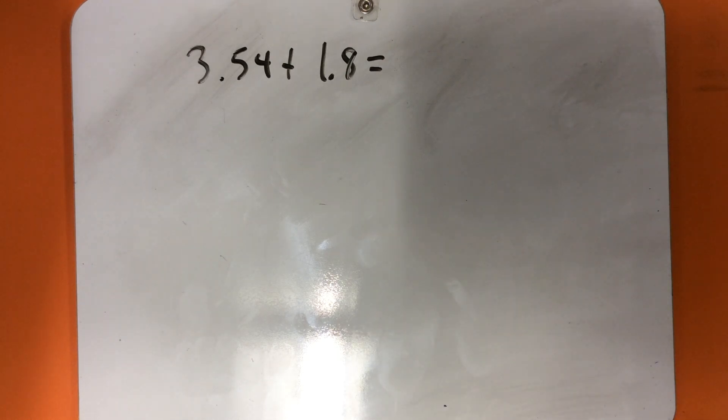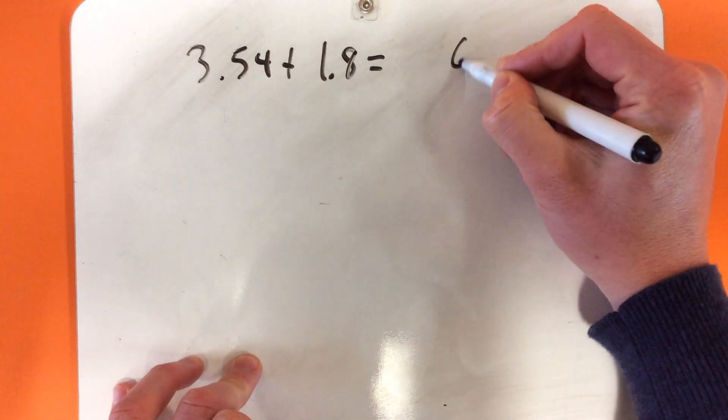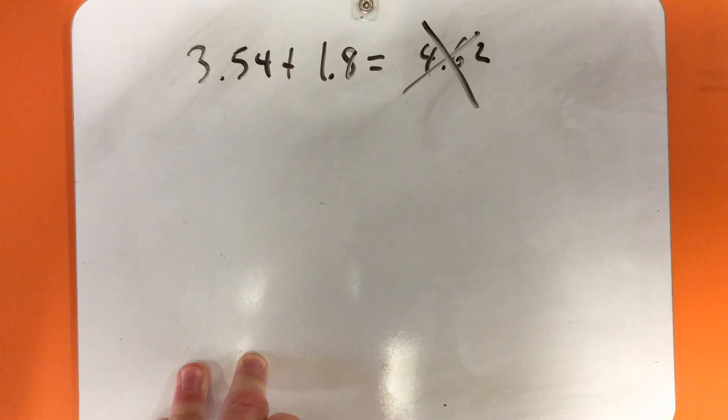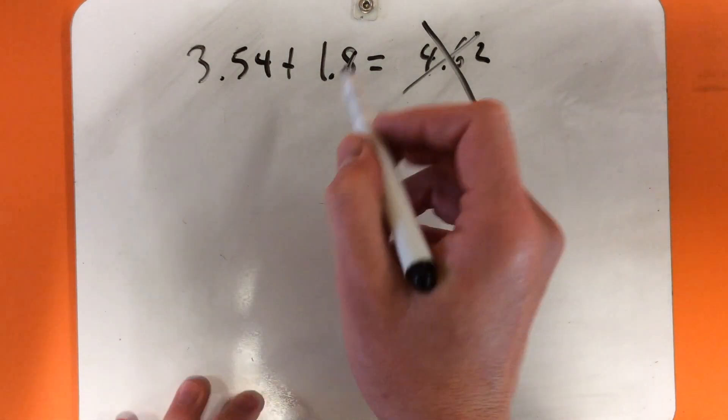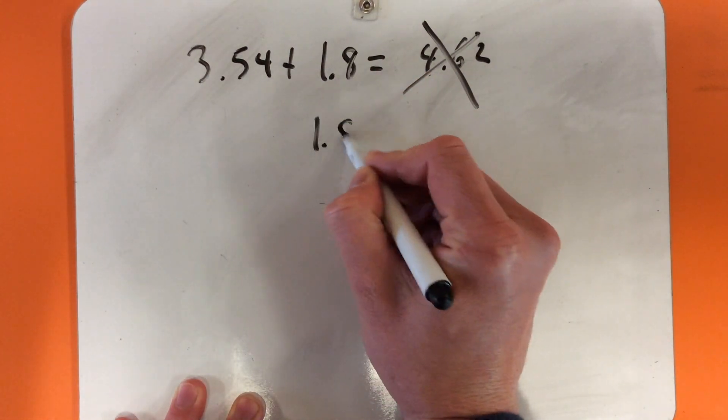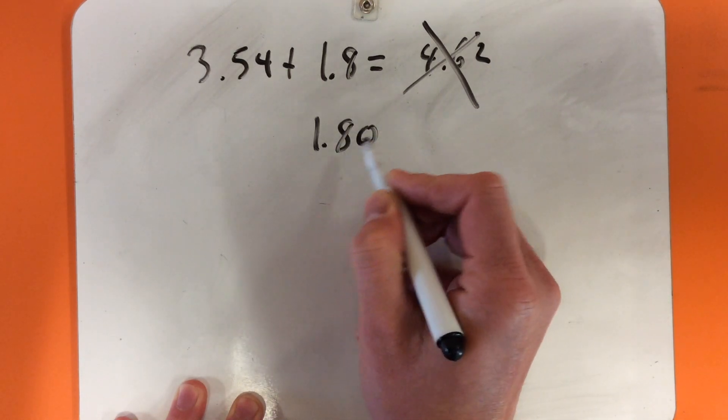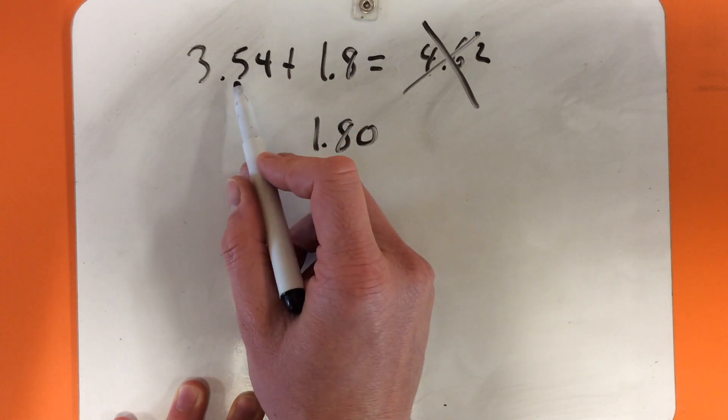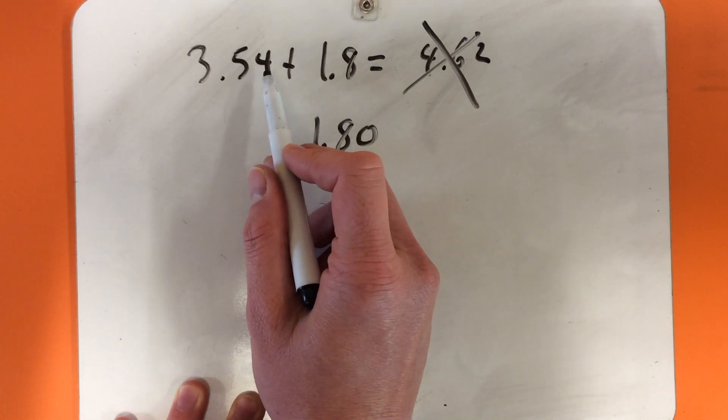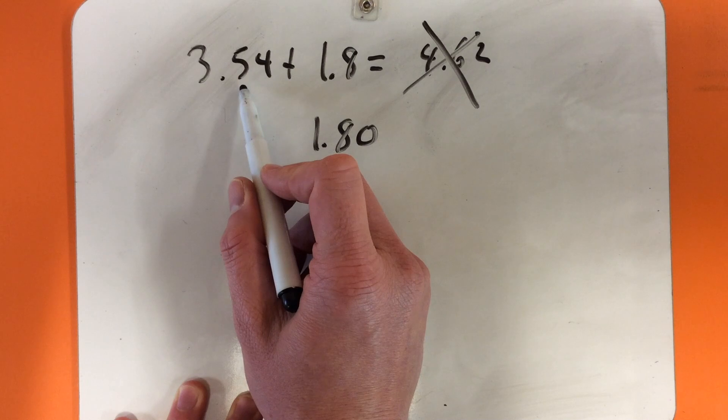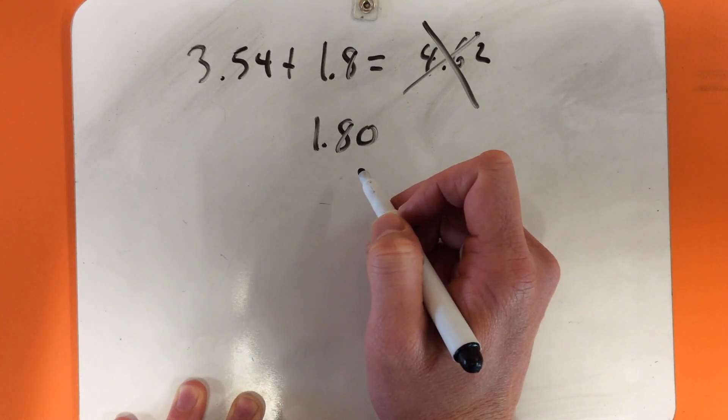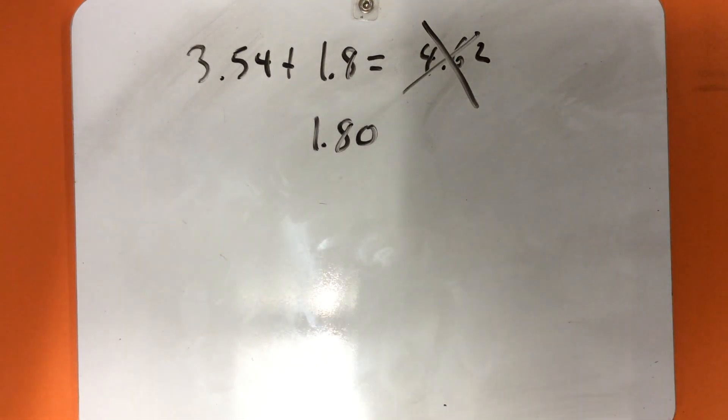When a lot of people look at this question, they think it's really easy. They think, oh, 54 plus 8 is 62, and 3 plus 1 is 4, so it's 4.62. But that is not correct. This number here actually could also be written like 1.80, because that 8 is 8 tenths, not 8 hundredths. 54 is 54 hundredths. There's actually 5 tenths and 4 hundredths there. In the next bit, I'm going to show you how to use materials to solve this question properly.